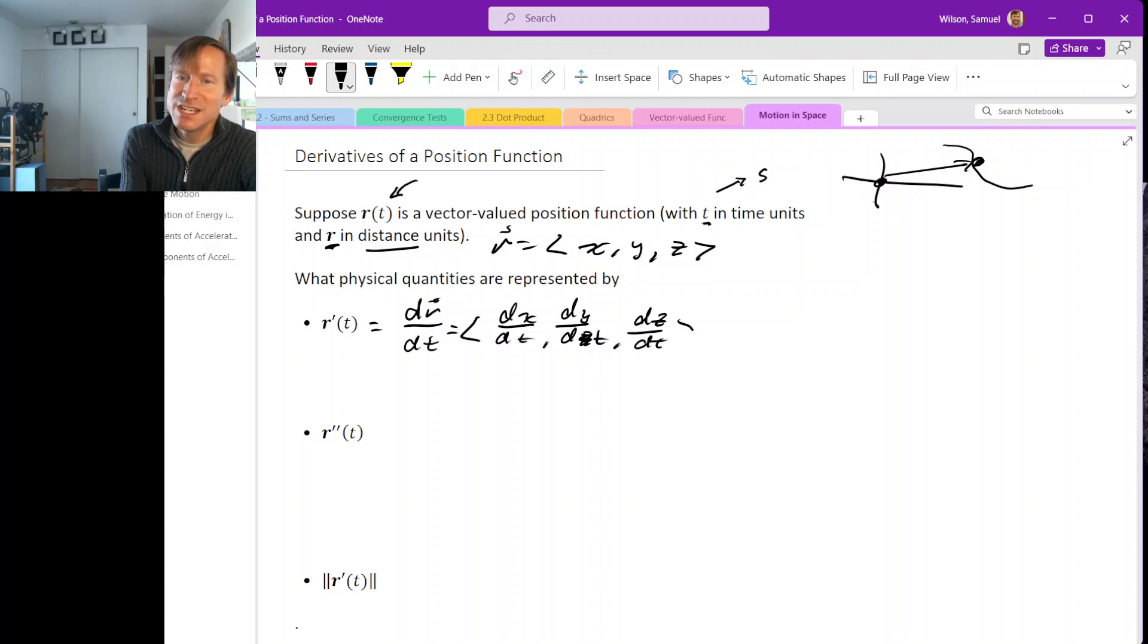And of course, each one of these coordinates is a velocity in one direction. And so when we package all of these up into a vector, we get the overall velocity vector. Of course, this is no surprise, right? When we take the derivative of a position, we get a velocity.